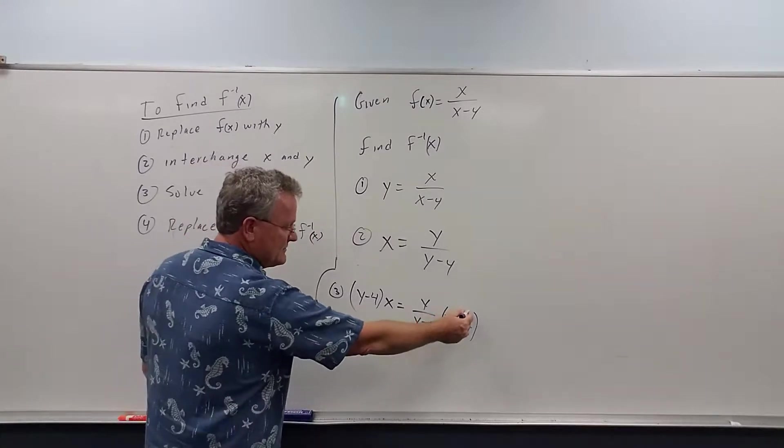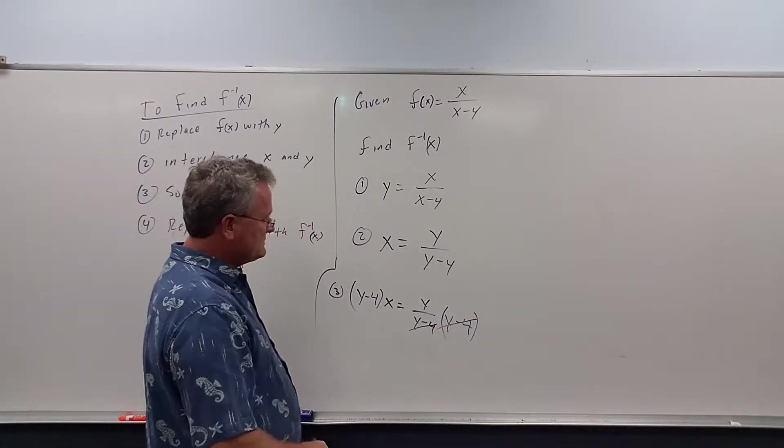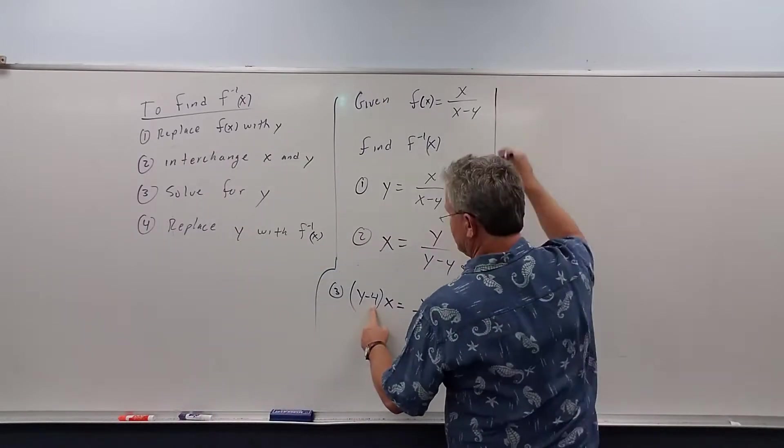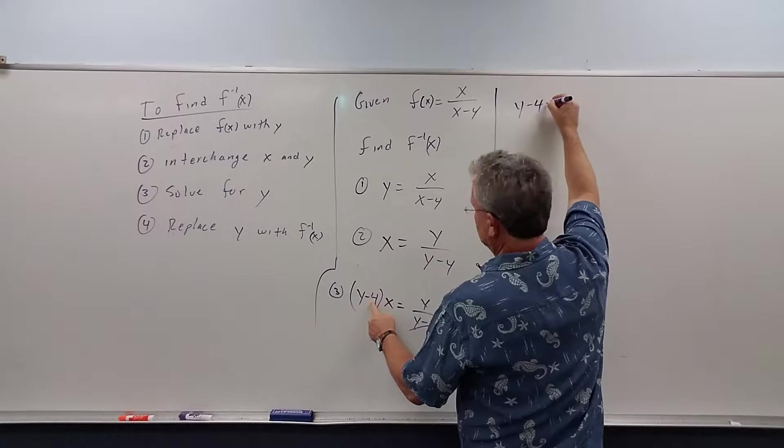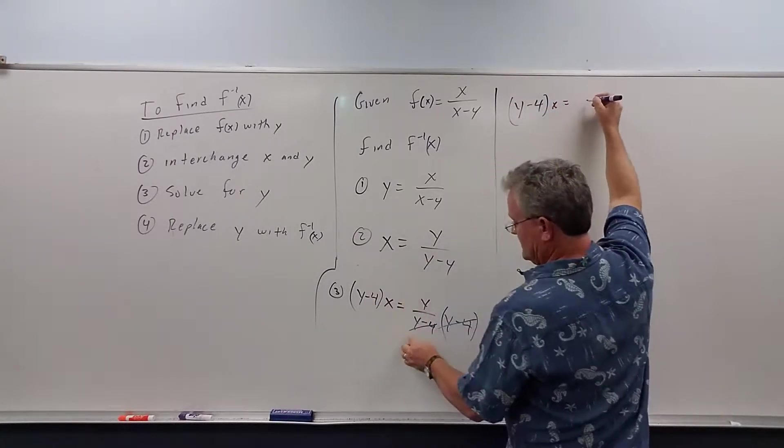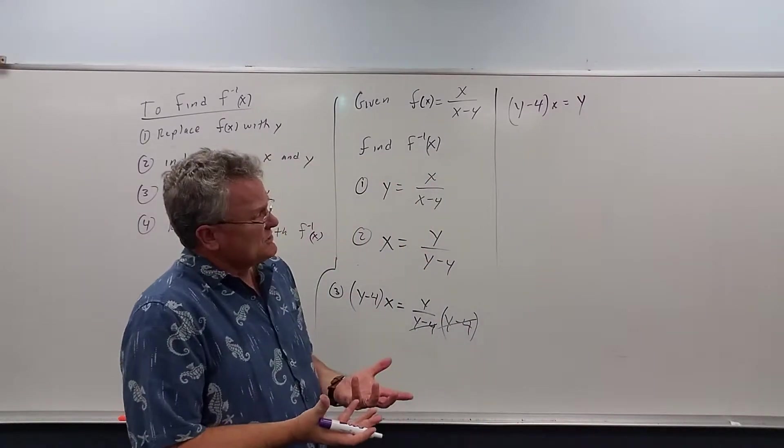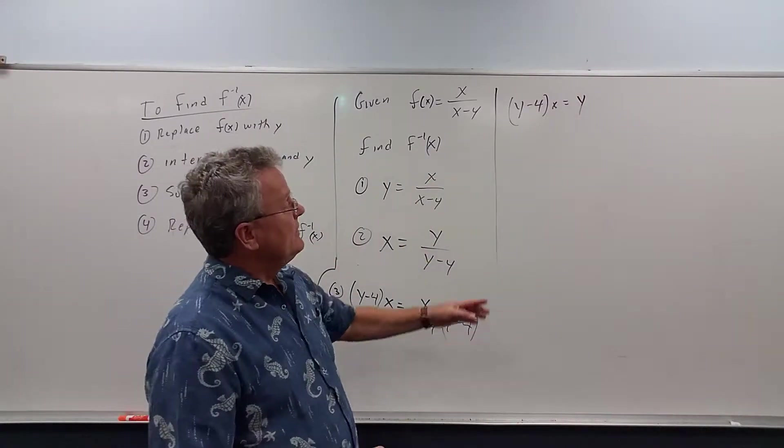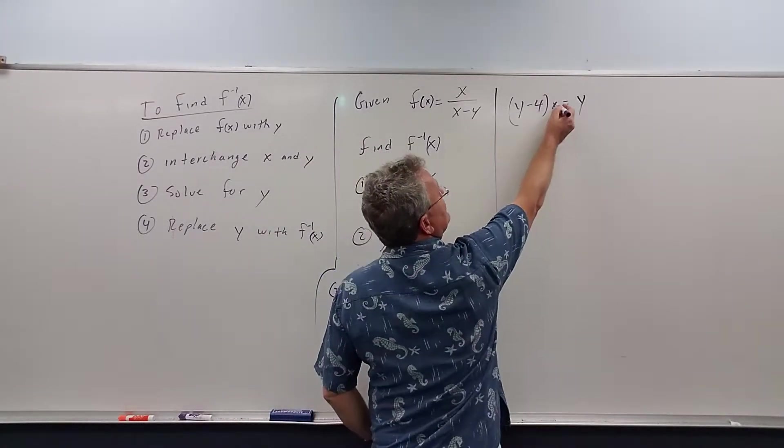On this side, the y minus 4's cancel. And I get x times y minus 4, or y minus 4 times x, equals these cancel. I'm left with y. Alright, so we're trying to solve for y. Well, in this problem, let's distribute the x.